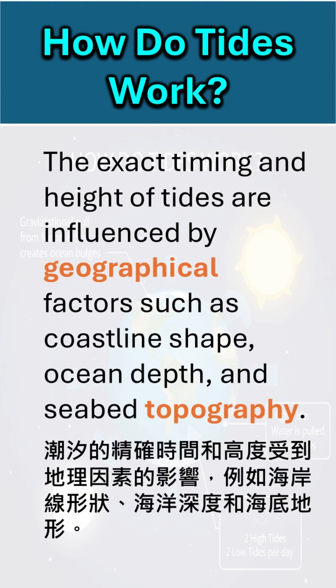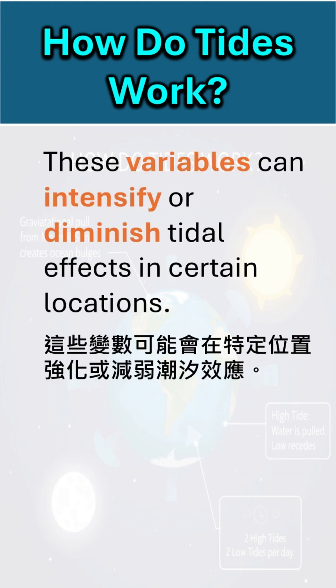The exact timing and height of tides are influenced by geographical factors such as coastline shape, ocean depth, and seabed topography. These variables can intensify or diminish tidal effects in certain locations.